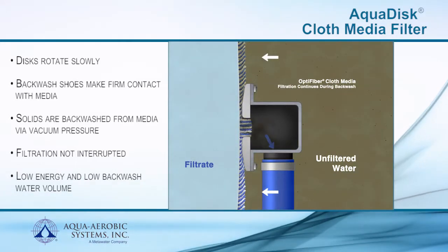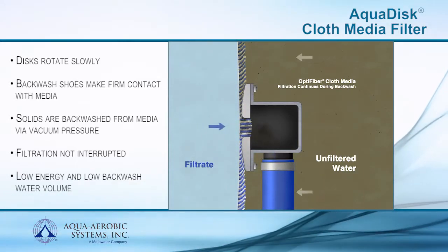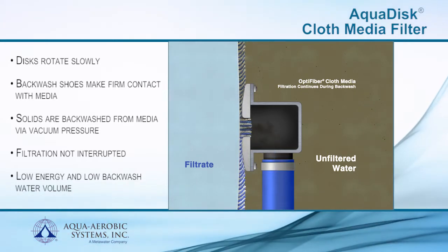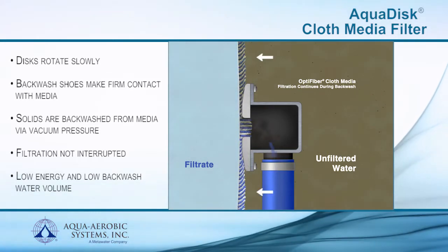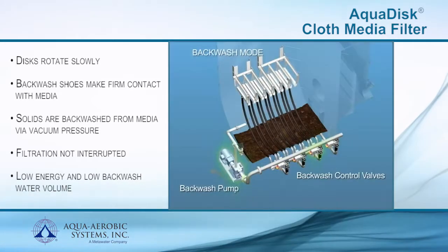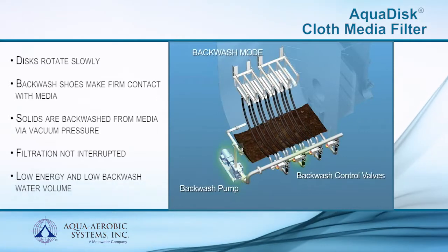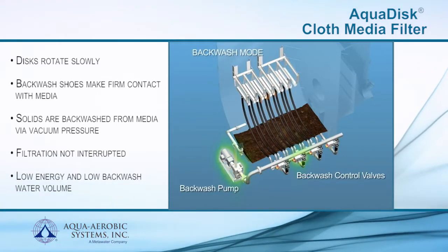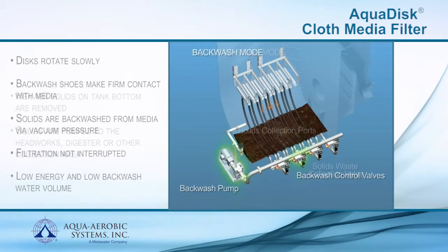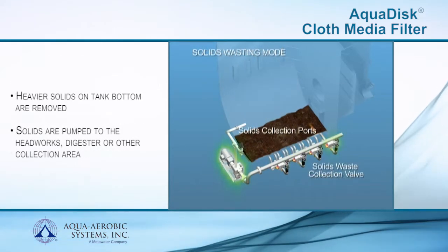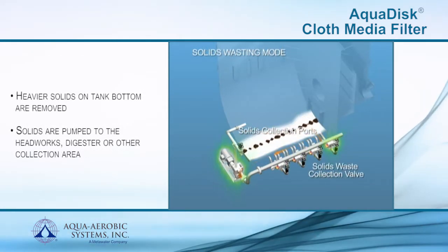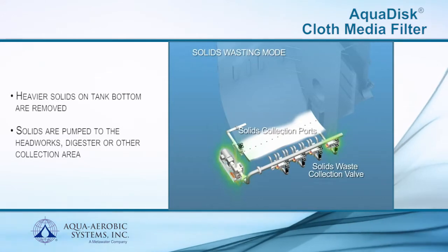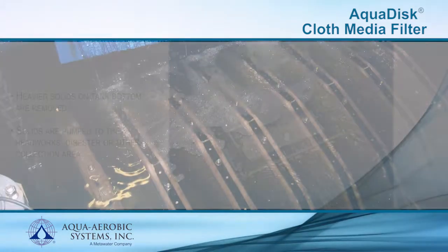Backwash water is typically directed to the plant's headworks while normal filtration continues without interruption. Due to the vertical orientation of the cloth media, heavier solids may settle to the bottom of the tank. These solids are automatically pumped on an intermittent basis by a solids waste control valve back to the headworks, digester, or other solids collection area of the treatment plant.